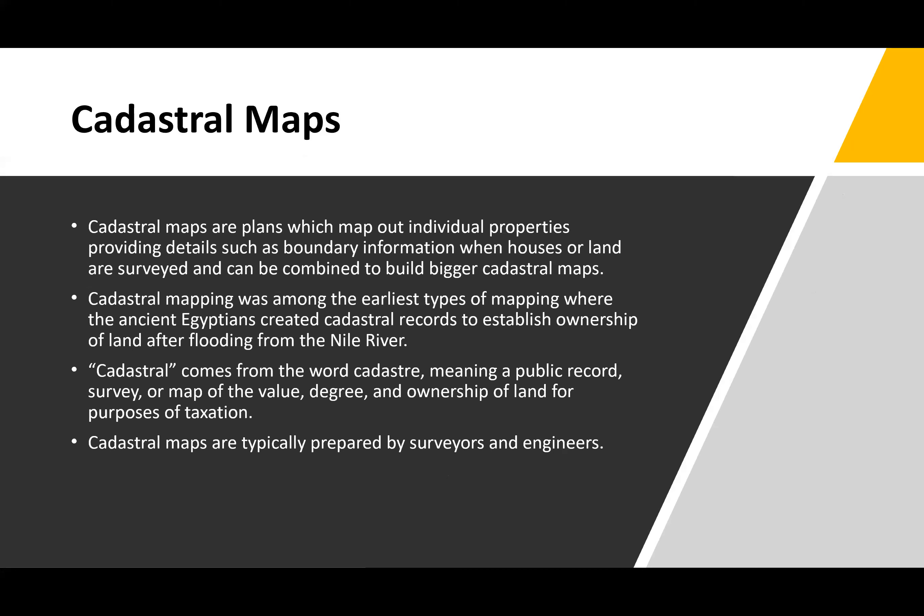Cadastral maps are plans which map out individual properties, providing details such as boundary information when houses or land is surveyed, and can be combined to build bigger cadastral maps. They are among the earliest types of mapping. The ancient Egyptians created cadastral records to establish ownership of land after flooding from the Nile River. The word cadastral comes from 'cadastra,' meaning a public record, survey, or map of the value, degree, and ownership of land for purposes of taxation.